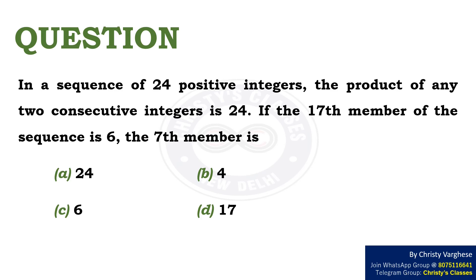If the 17th member of the sequence is 6, the 7th member is — Options: A. 24, B. 4, C. 6, or D. 17.